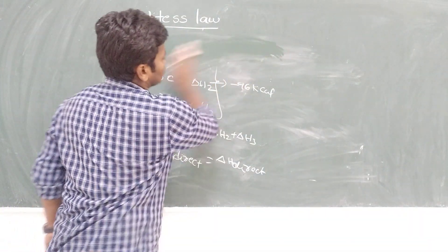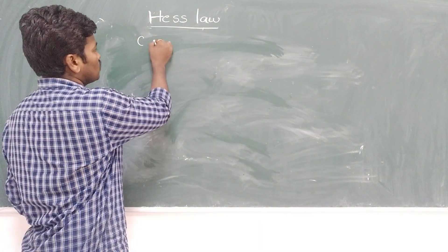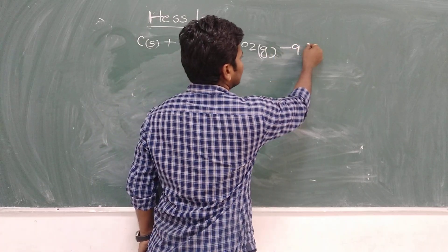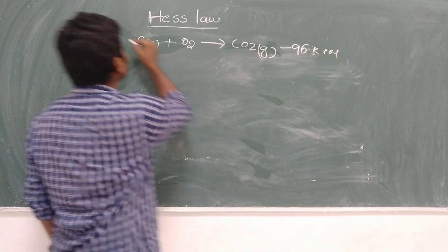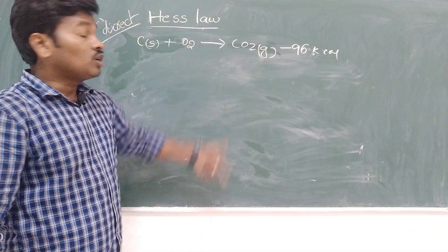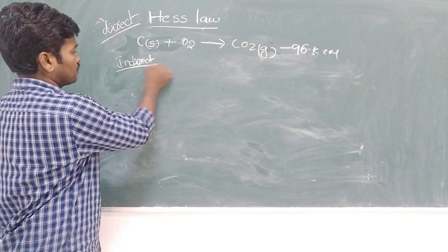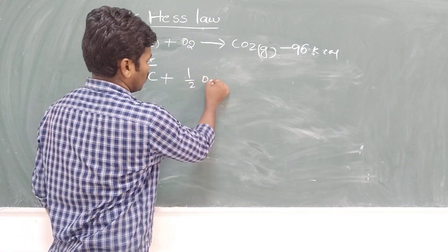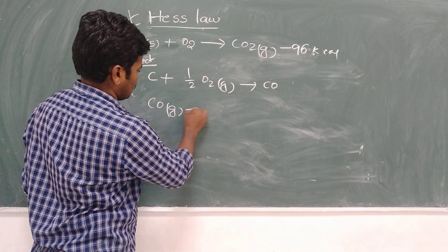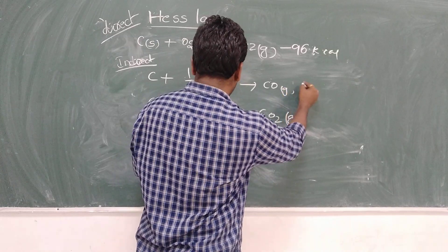We can illustrate this with the formation of CO₂. By the direct method: C + O₂ → CO₂, giving minus 96 kilocalories. By the indirect method, the first step is C + O₂ → CO, and the second step is CO + O₂ → CO₂.